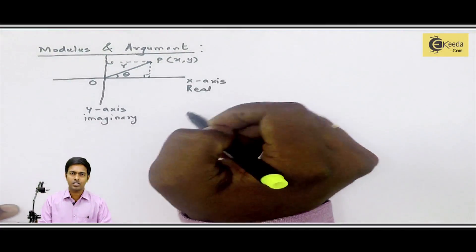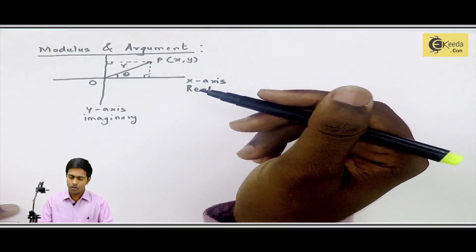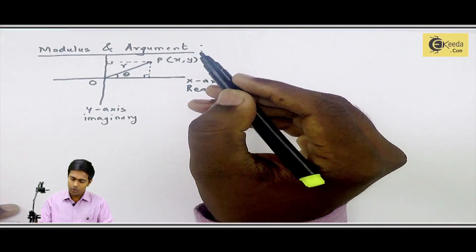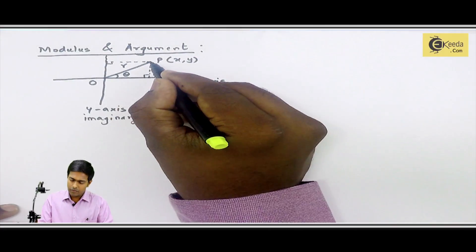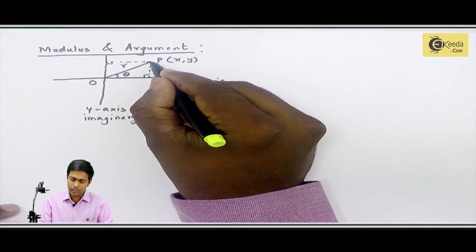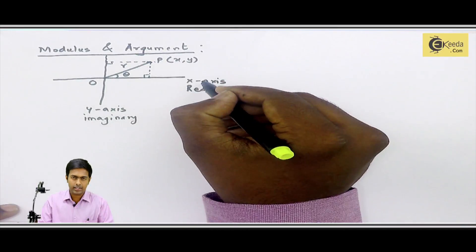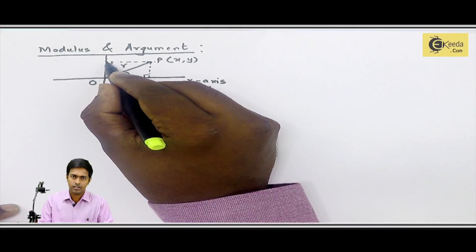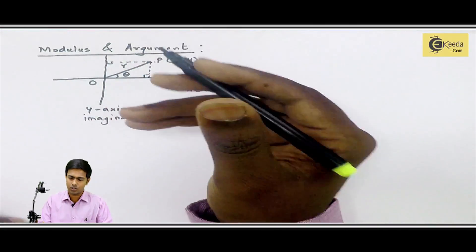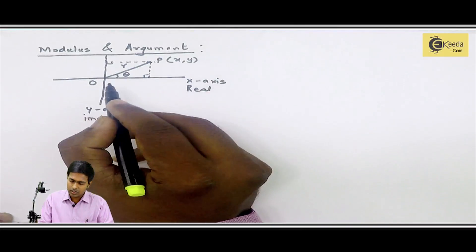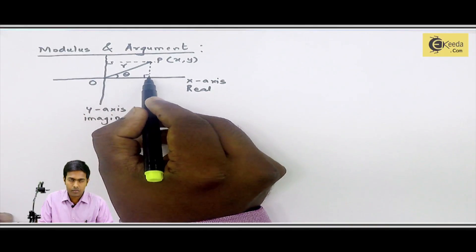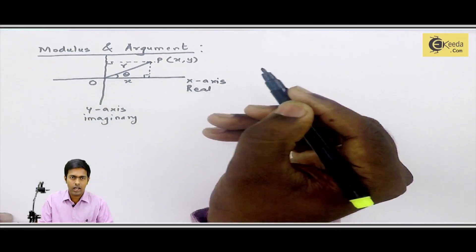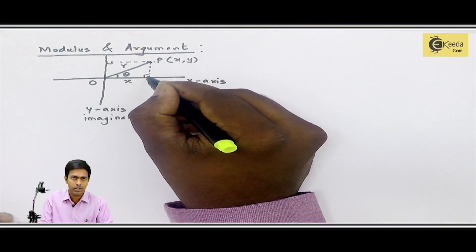Now, using all these relations, how can we find the formula for modulus and argument? As we have drawn a perpendicular from point P on the x-axis and a perpendicular from point P on the y-axis, let's consider some distances here. The distance along the x-axis is equal to x and the distance along the y-axis is y.